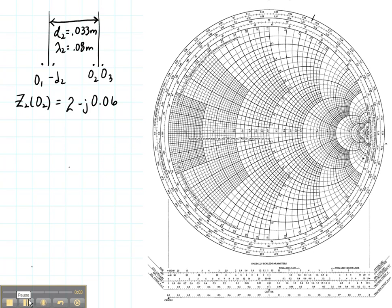Now we are ready to plot Z2 at O2 on the Smith chart. Right here is the 2 and the negative part is about 0.56. So this point right here is Z2 at O2.